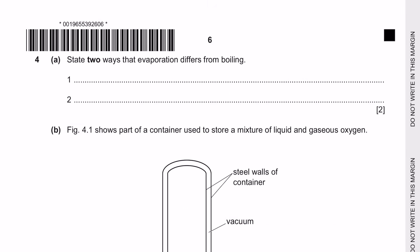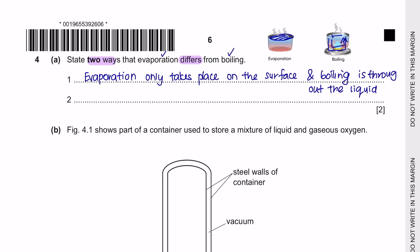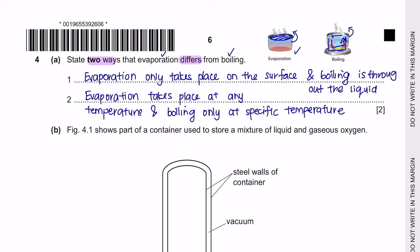Next, question 4A: State two ways that evaporation differs from boiling. Evaporation occurs only at the surface of the liquid, whereas boiling transfers heat throughout the entire liquid. Additionally, boiling only happens at a specific temperature, while evaporation can occur at any temperature.